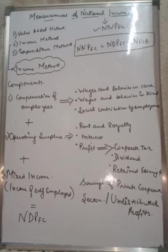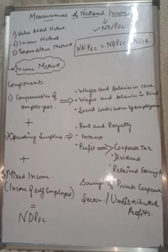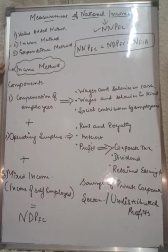Hello everyone, today we are going to discuss how we measure national income. Basically, national income is the final value of goods and services produced in our economy, including income coming from abroad — the total final value of goods and services produced in our nation. National income is calculated by three methods: first is value added, second is income method, and third is expenditure method.